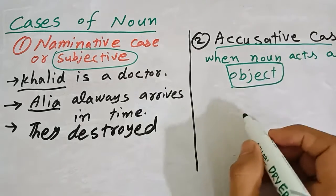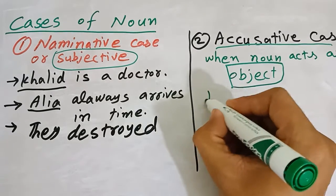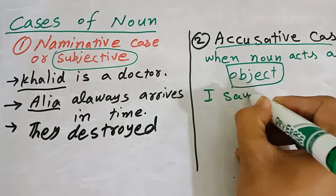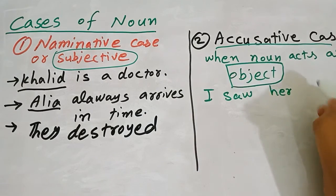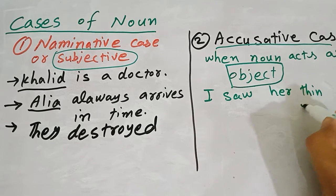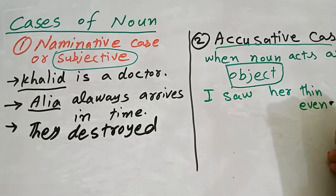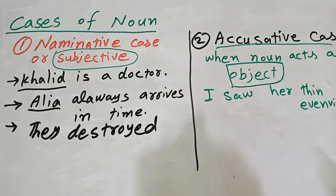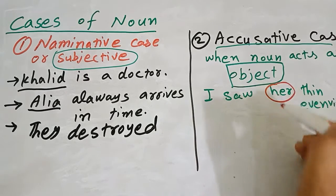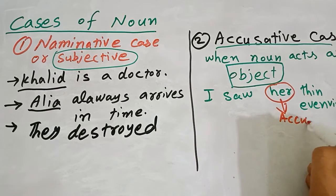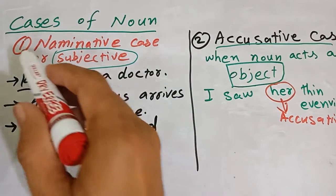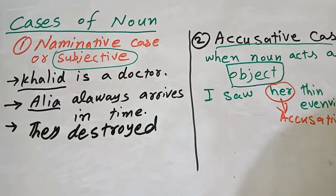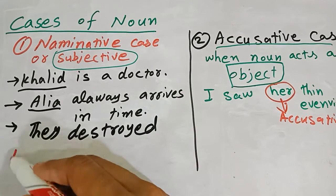For example: I saw her this evening. So 'her' is the accusative case of the noun. We have discussed the nominative case and the accusative case. Now I will discuss the third case.